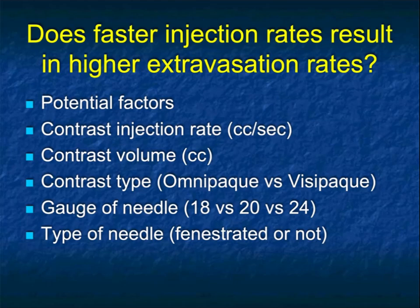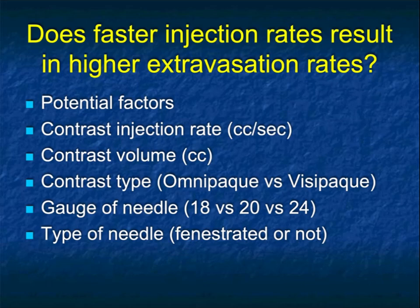IV contrast, to me, is the most concerning part of the CT exam — not because I worry about contrast reactions, and not because I worry about renal failure, but because I always worry about extravasation. Never do harm to a patient. What are the factors that can lead to extravasation? Is it the injection rate? The volume of contrast? The type of contrast? The gauge needle we use? The type of needle?